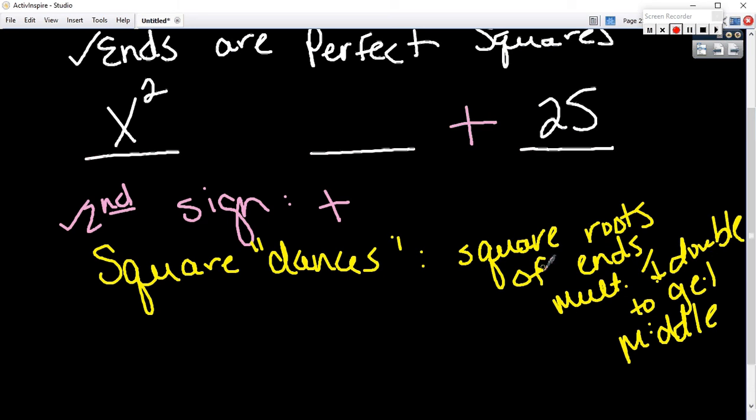All right, so what we want to check for: the square root of x squared is x, the square root of 25 is 5. If you multiply those two things together you get 5x. Now double it: 10x. That has to be what sits in the middle. If that were a 5x in the middle, this wouldn't work. So there's three things you have to check for: the ends are perfect squares, the second sign is a plus, and that it square dances. You do the square root, square root, multiply and double to get what's in the middle.